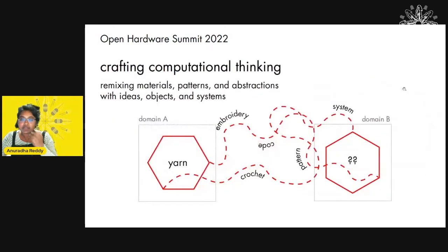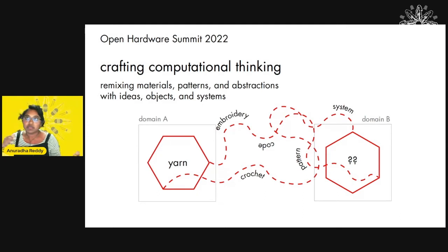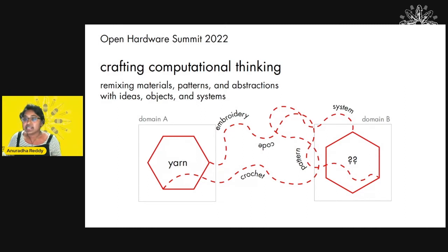This is what I call crafting computational thinking. The idea is that you can take any two domains and try to remix them — take any element from one domain and map it onto another. You can take two domains that are very close to each other, like knitting and crochet, or very far apart. The farther apart the domains are, the more difficult and more challenging it becomes, but also very exciting — because when you hit that sweet spot, it's a joyful and rewarding experience. I'll talk about three projects where I think I hit some sweet spots.